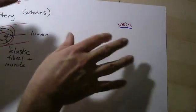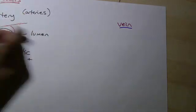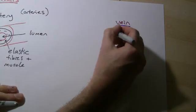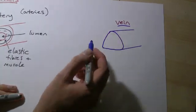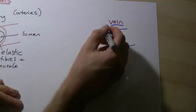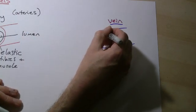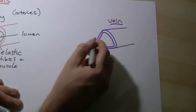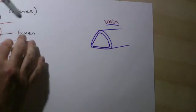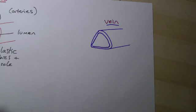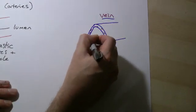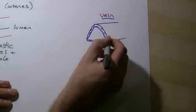I'm going to draw it in blue. Now notice this time, I've drawn it as a triangular shape. They're not as nice and roundy as the arteries. They've got a much larger lumen, much bigger space in the middle. And although they still have the elastic fibers and the muscle, it's much thinner. So the wall here is much thinner.